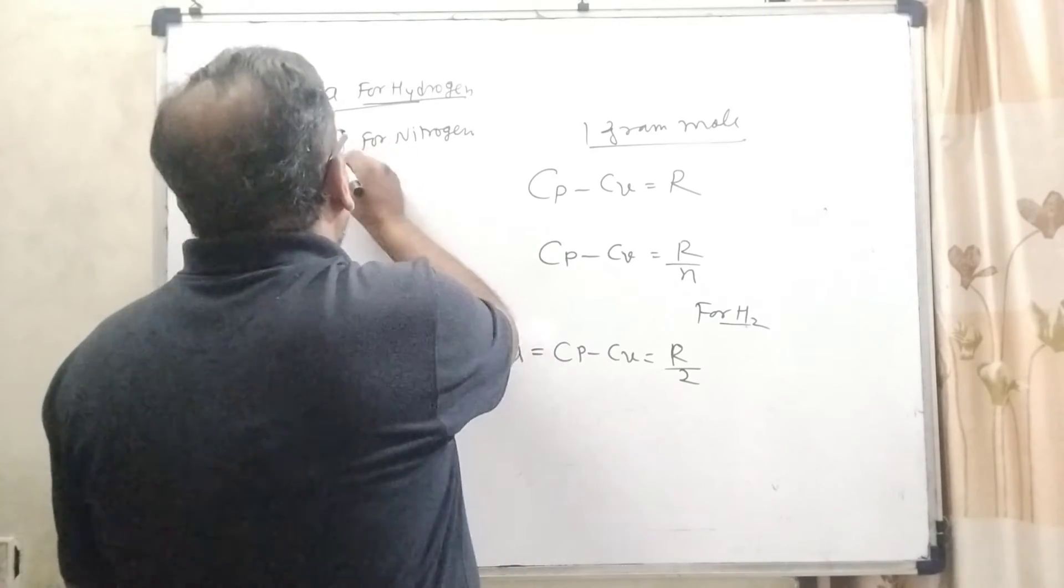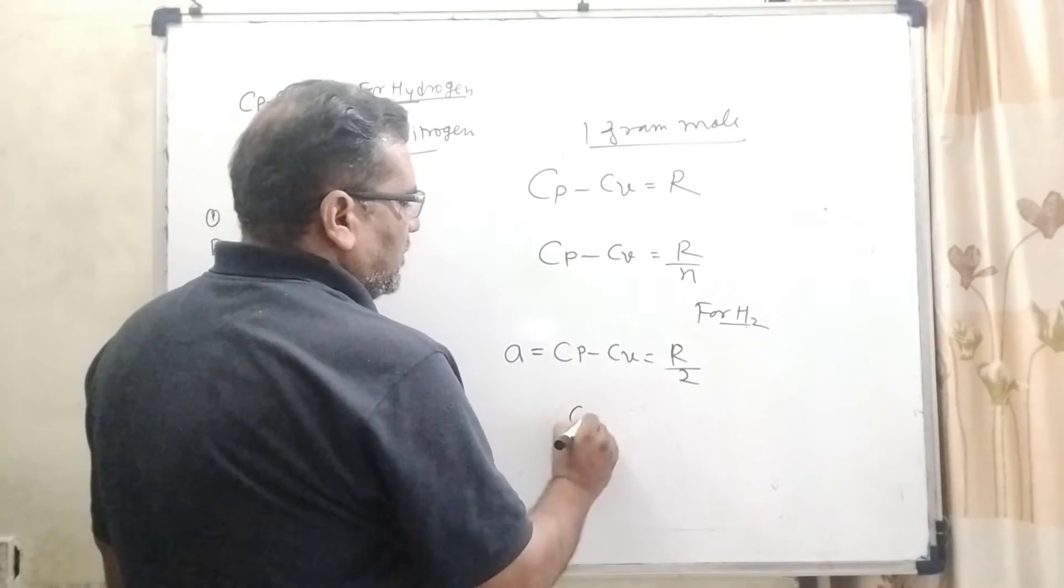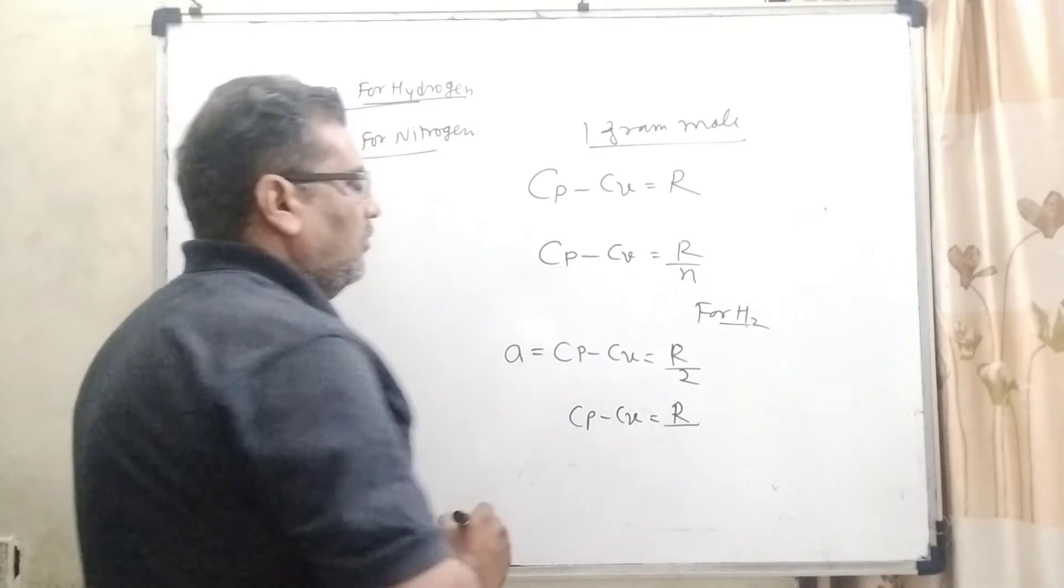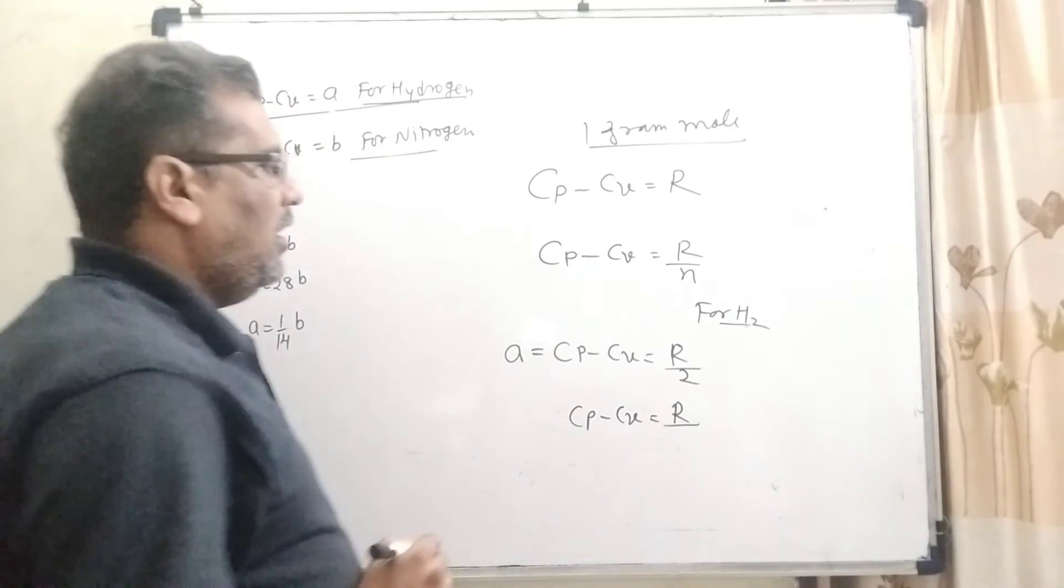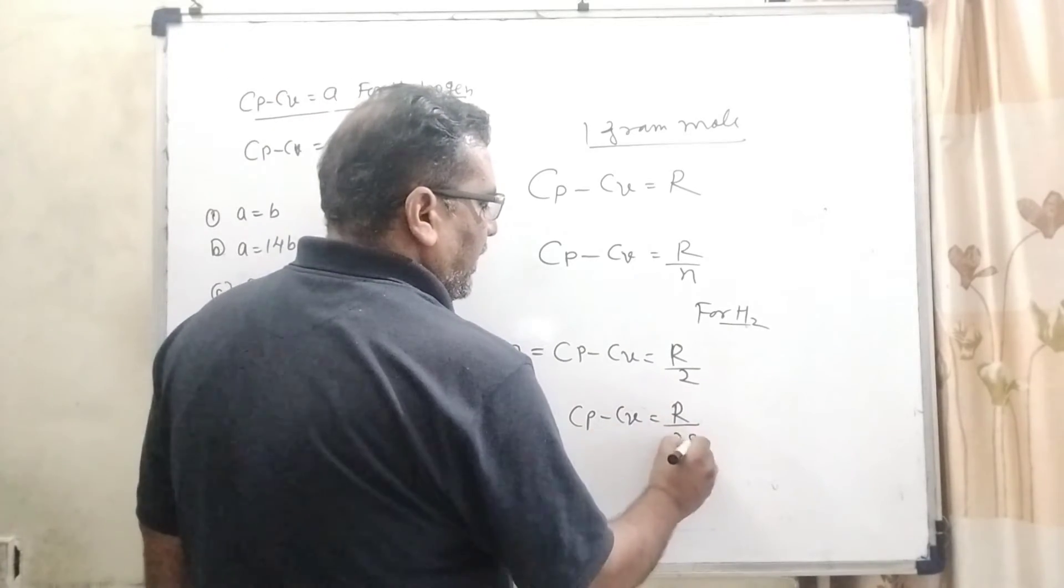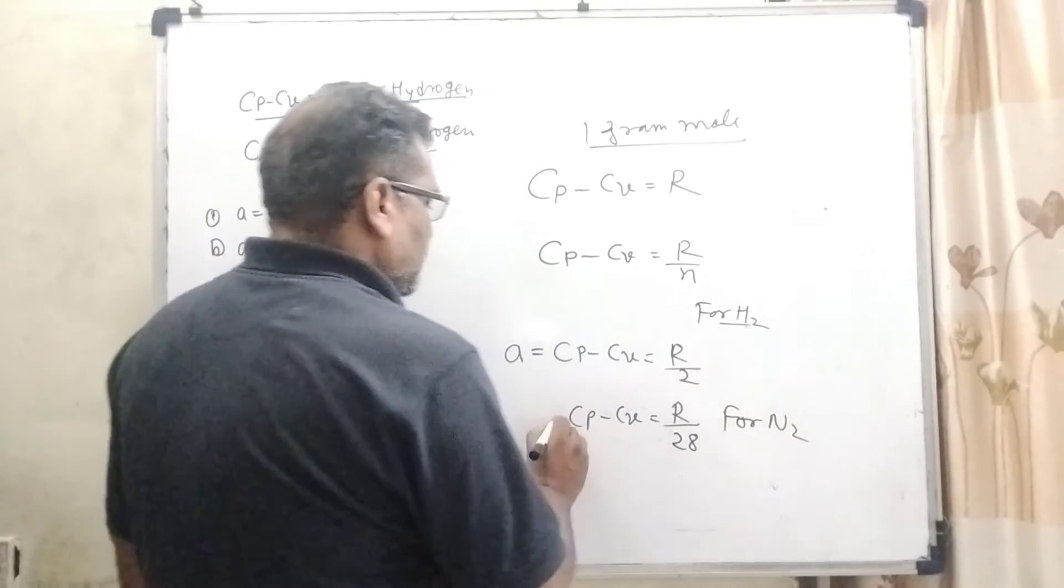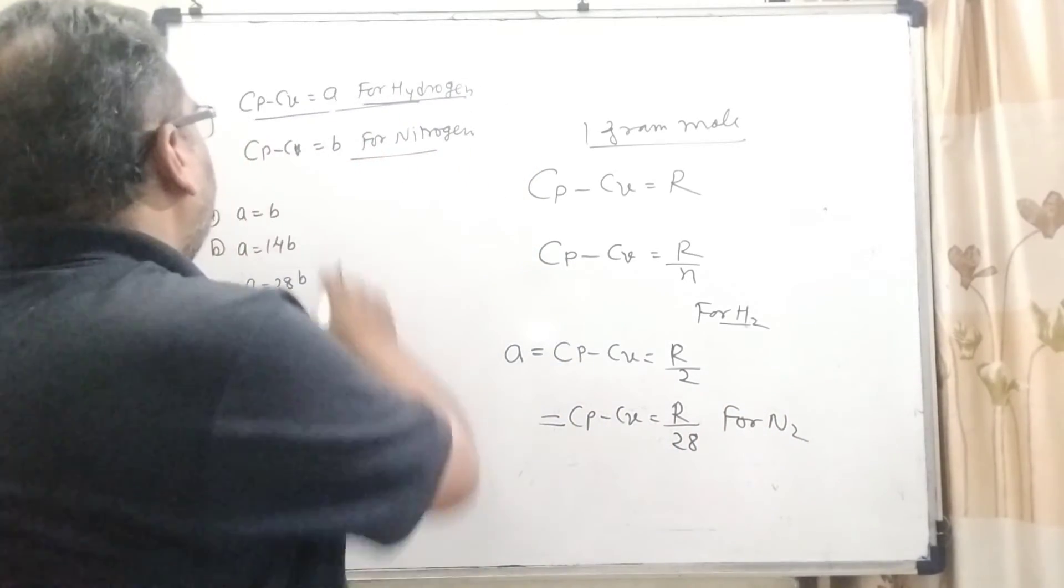And same things we have applied for the nitrogen. So Cp minus Cv equal to R by, what is the 1 mole of nitrogen, that is 28. For N2. So here, that is given B.